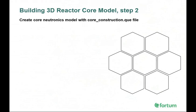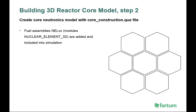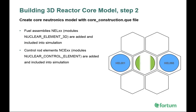After the thermohydraulic part of the 3D reactor core model has been built, it is time to add neutronics. The 3D reactor core example has a core construction Q-file that will create all necessary parts. First, fuel assemblies must be added — in the example they are named 'NL' plus the assembly number. After that, control elements are added. Once fuel assemblies and control rods have been added, it is the turn of the Nuclear Reactor 3 module.